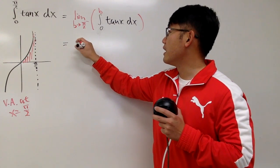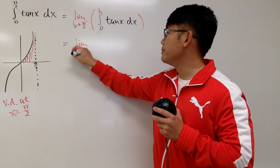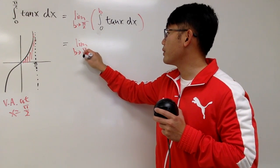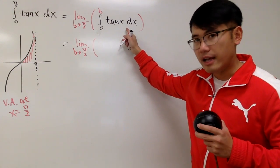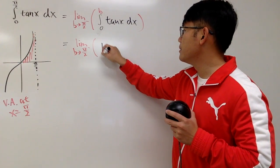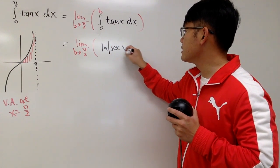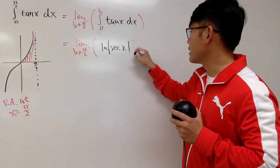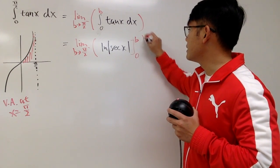Here we have the limit as B going to pi over 2 minus. Integrating tangent, you get natural log of secant. And let me just put that down right here for you guys. And then we plug in, plug in. So we have the 0 to B like this.